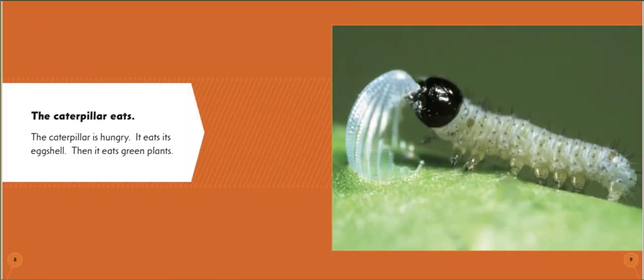The caterpillar eats. The caterpillar is hungry. It eats its eggshell. Then it eats green plants.